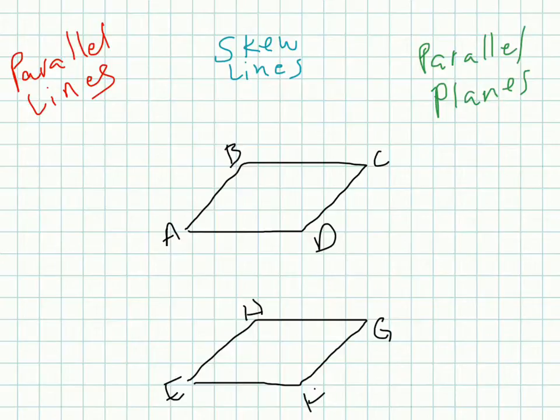Looking at parallel lines, there's two parts of this definition. The first part is that they're coplanar. Coplanar means that lines exist on the same plane. If we're just working on this first plane, here's line segment AB. And another line that is coplanar is line segment AD. These are not parallel, but they're coplanar.